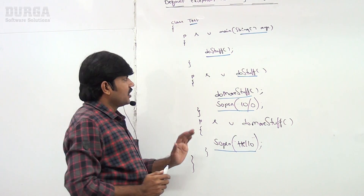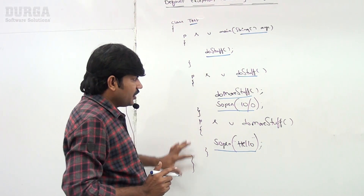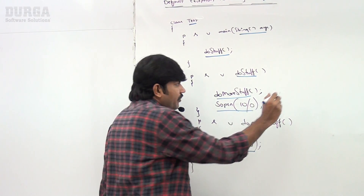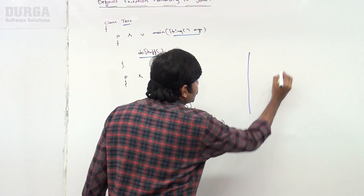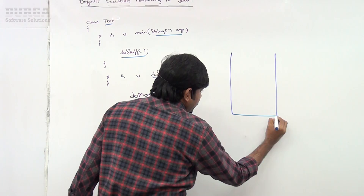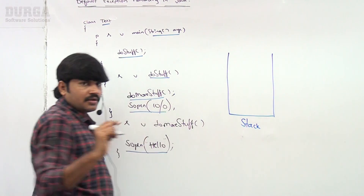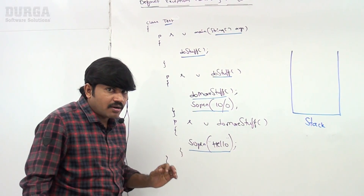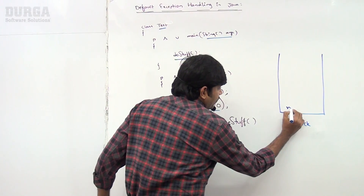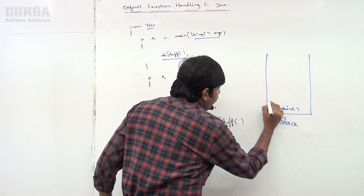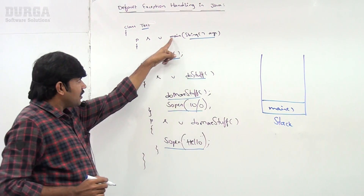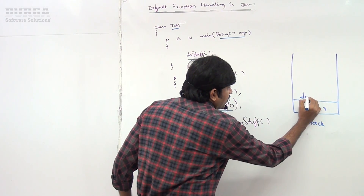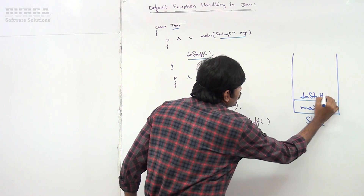In this program, how many threads are there? Only one thread — the main thread. JVM is going to create a runtime stack for the main thread. Now observe which method is going to be called first by the JVM: the main method. Main thread is responsible to call the main method, and from inside main it is calling doStuff.